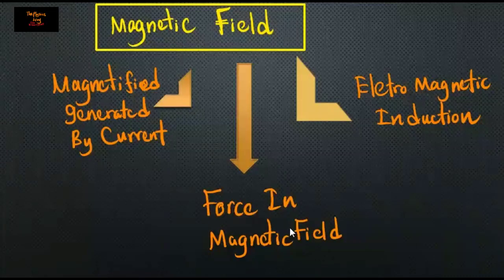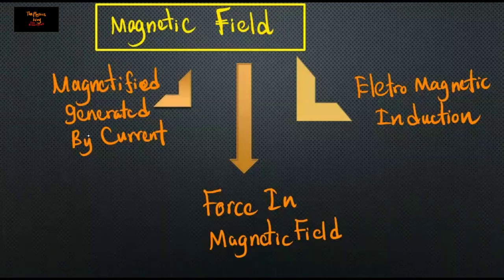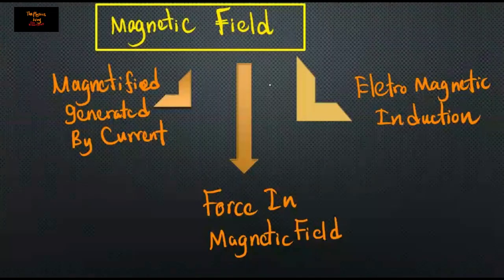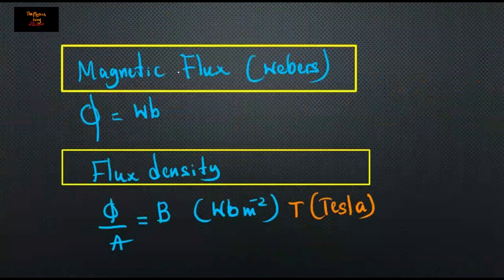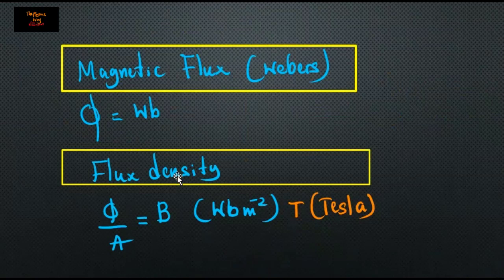Moving into magnetic fields, we are going through the very basic equations. There are three main parts: magnetic field generated by current, force in magnetic field, and electromagnetic induction. Let's move into magnetic flux — phi — measured in webers. Flux density is flux divided by area, measured using tesla.